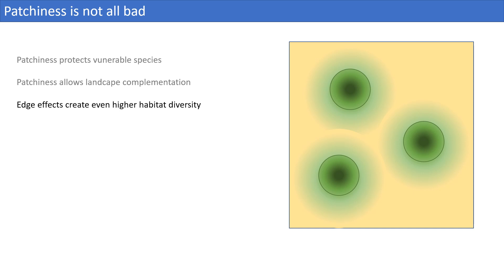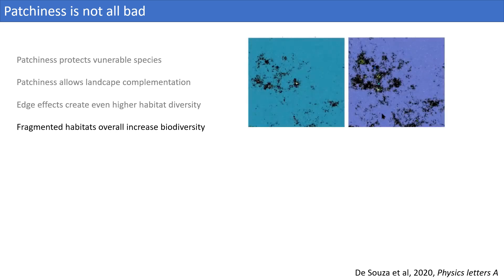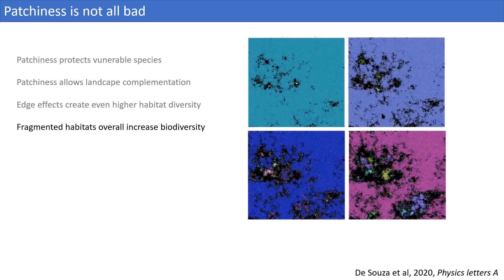Obviously, the benefit of the edge effect is cancelled out if it comes at the expense of other habitat types, which can happen if the patch size is too small. When you combine all these factors, patchy landscapes generally support higher biodiversity than homogenous ones, as observed both empirically and theoretically. These simulations show the number of species maintained in landscapes with different levels of patchiness — from least patchy on the top left to most patchy on the bottom right. In patchier landscapes, more than one or two species dominate, presumably because patchiness protects smaller species from the negative effects of the dominant species.